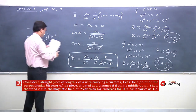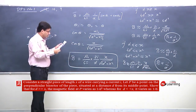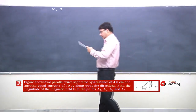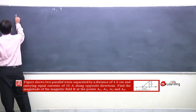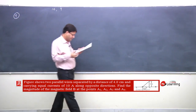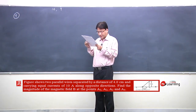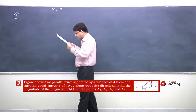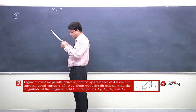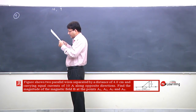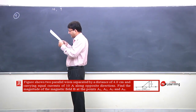Let's now attempt and solve the 9th problem. The figure shows two parallel wires separated by a distance of 4 centimeters. We have two parallel wires carrying equal currents of 10 Ampere along opposite directions. Find the magnitude of magnetic field at points A1, A2, A3, A4.